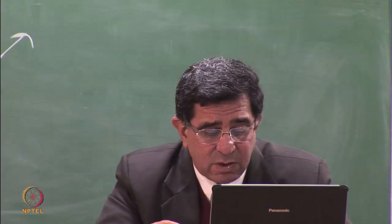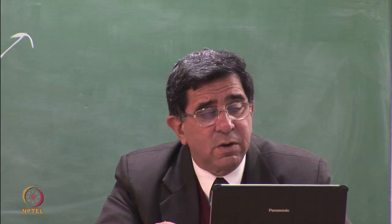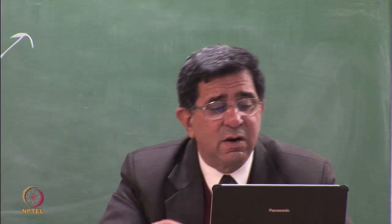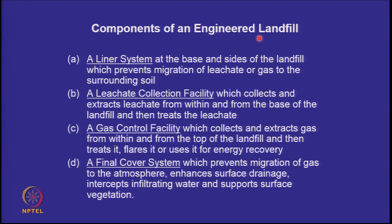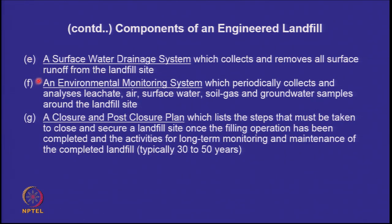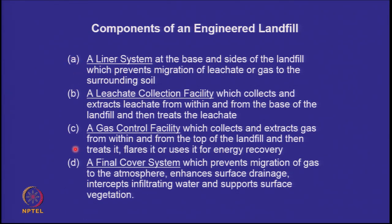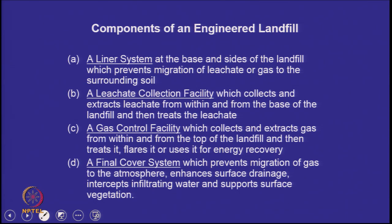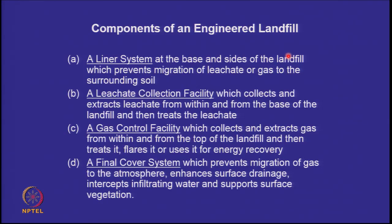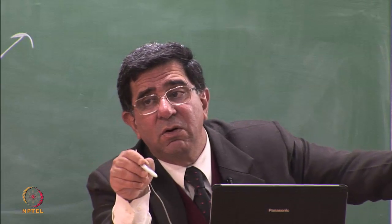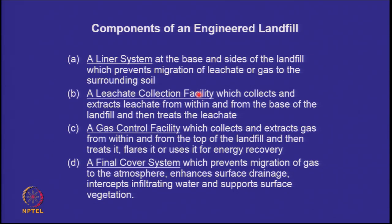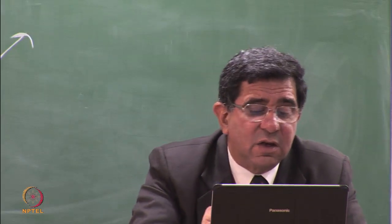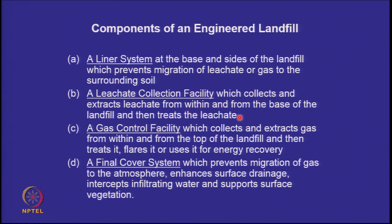If you put waste in a scientific or engineered manner on the ground, you create what is called an engineered landfill. The engineered landfill will have seven components. First, a liner system — an impermeable base at the base and sides of the landfill which prevents migration of leachate or gas to the soil. It is impervious to water and to gas; we think if it is not allowed to go upward it should not be able to go sideways either.